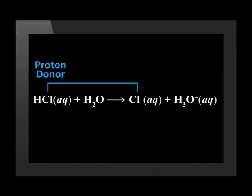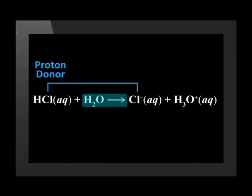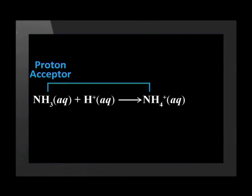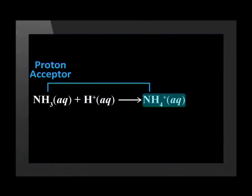Let's use the example of hydrochloric acid in water. During the reaction, the hydrochloric acid loses or donates a proton — an H⁺ ion — and becomes Cl⁻. HCl is a proton donor and is therefore an acid. Now let's consider ammonia in water. During the reaction, NH₃ gains or accepts a proton, an H⁺ ion, and becomes NH₄⁺. NH₃ is a proton acceptor and is therefore a base.